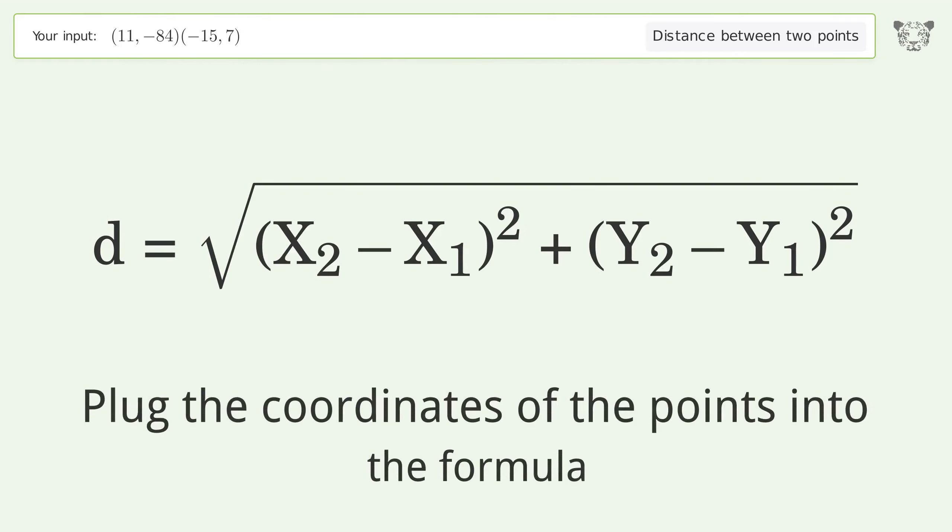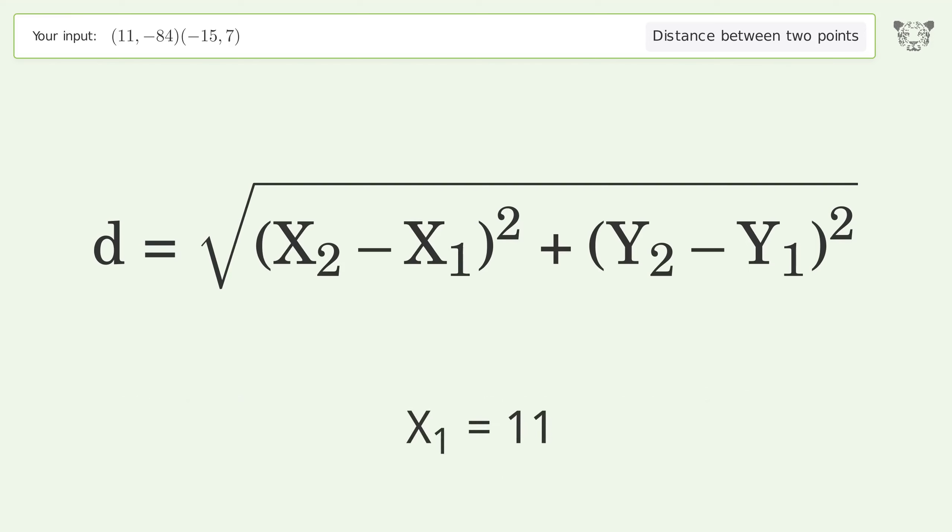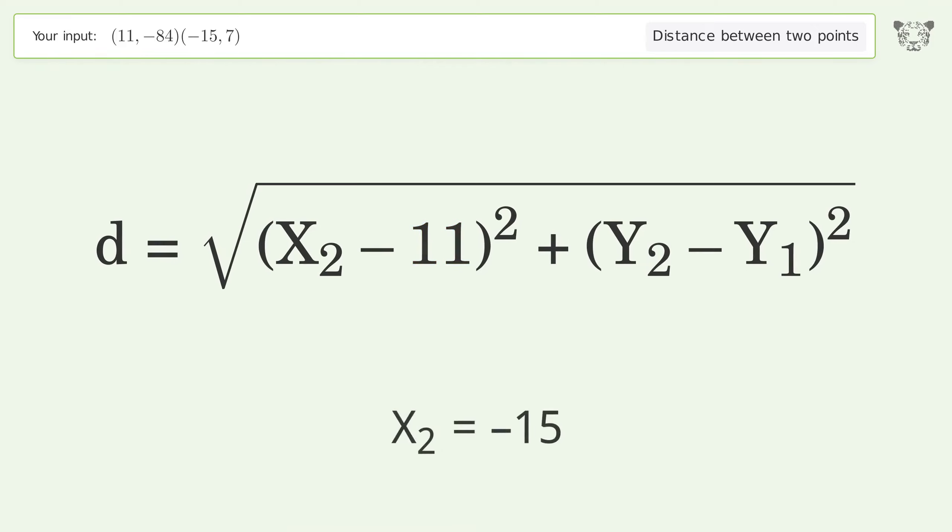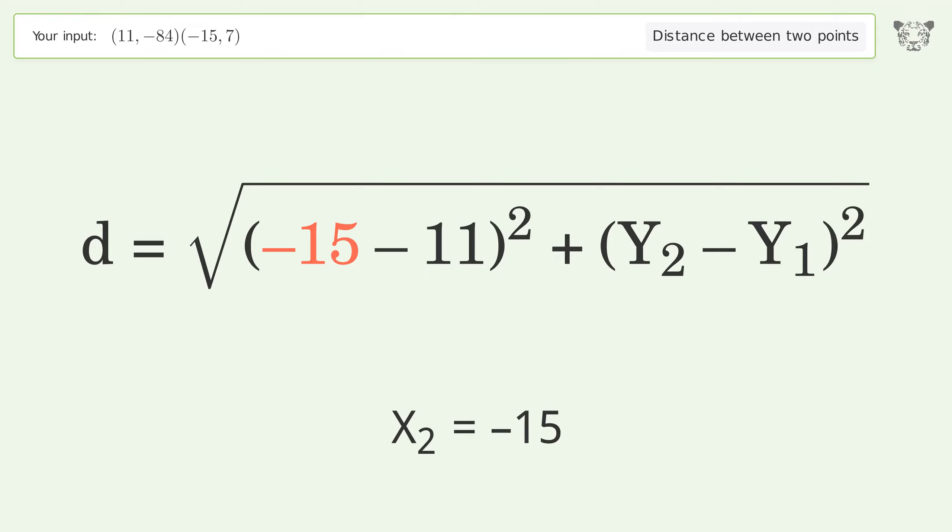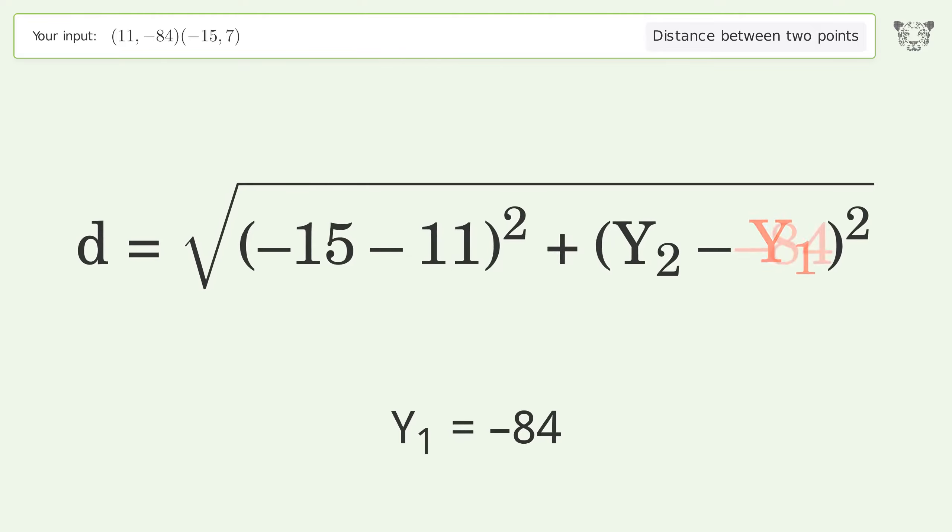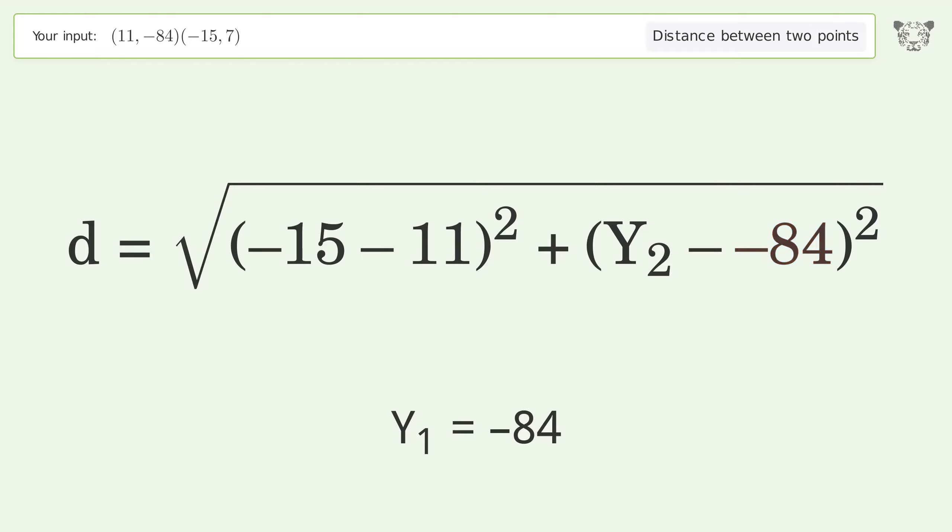Plug the coordinates of the points into the formula: x1 equals 11, x2 equals negative 15, y1 equals negative 84, y2 equals 7.